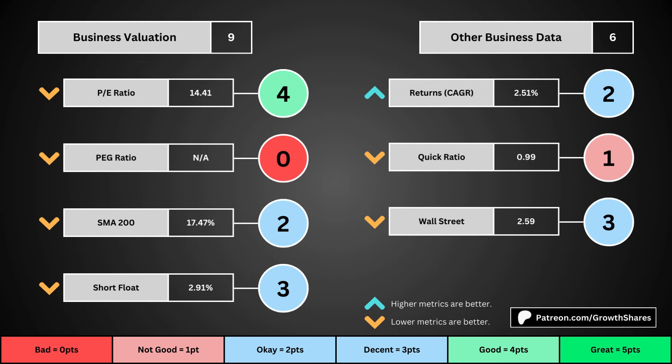The fourth set of metrics looks into other relevant data. First is the stock's performance over a set period of time — usually it's 10 years, but if the stock doesn't go that far back, we go with the earliest data up to 10 years. The quick ratio is basically how easy it is for the business to pay off its short-term obligations — we want that high so that it's easy to get rid of those debts. And then Wall Street is the average consensus rating Wall Street analysts give the stock, from a strong buy of 1 to a strong sell of 5. The better values get a higher point total.